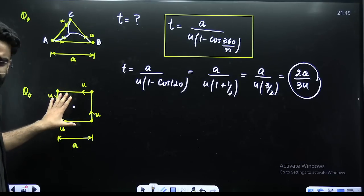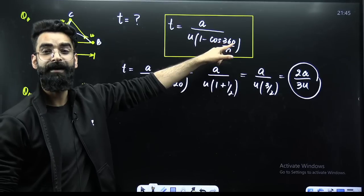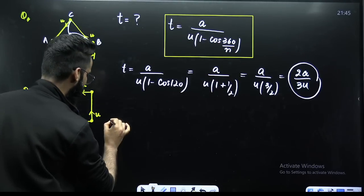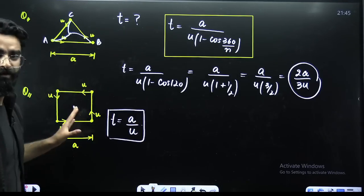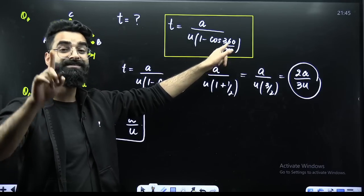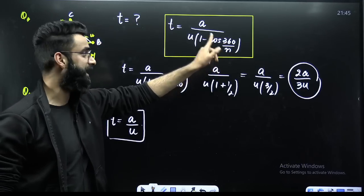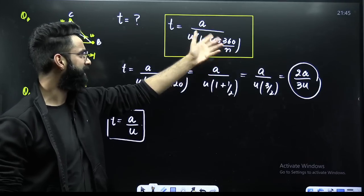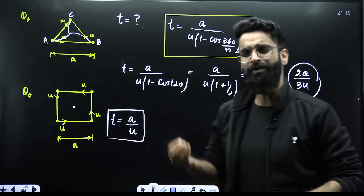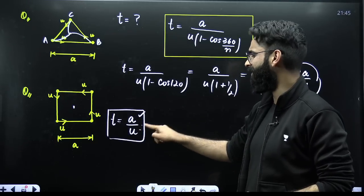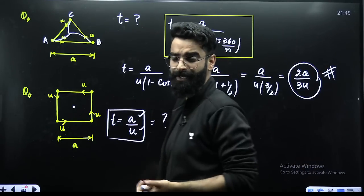Similarly, for the square, N equals 4, so we get cos(90). Cos(90) is 0, so T simply comes out to be A divided by U. N represents the number of sides of the polygon. If N equals 4, then 360 divided by 4 is 90, cos of 90 is 0, and the final answer T is A divided by U. There can be questions where values of A and U are given — you just put those values and get the final answer.